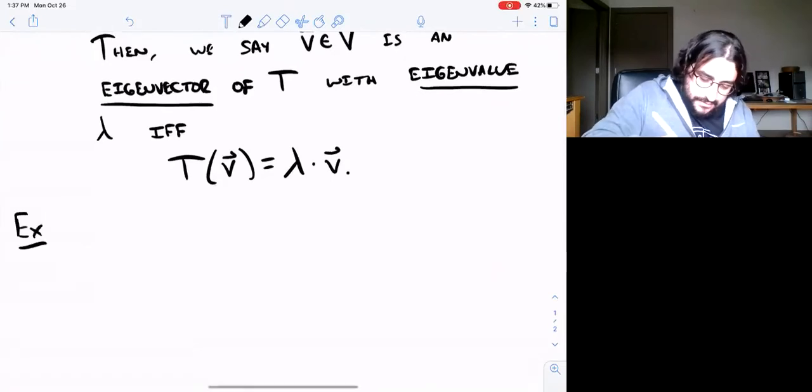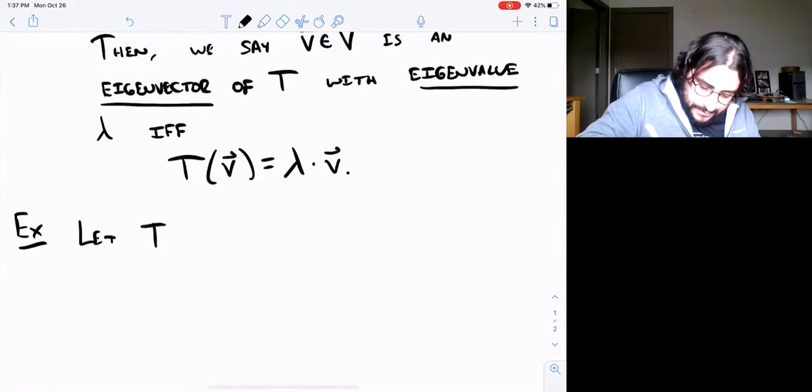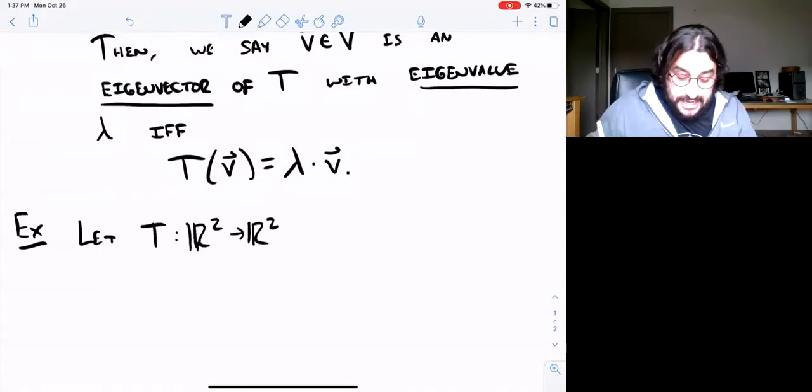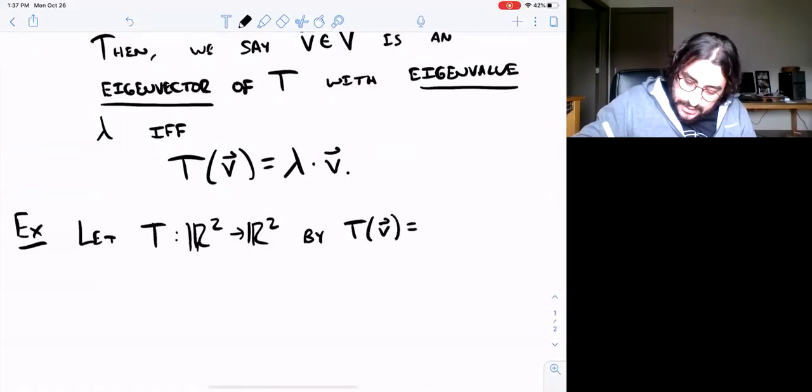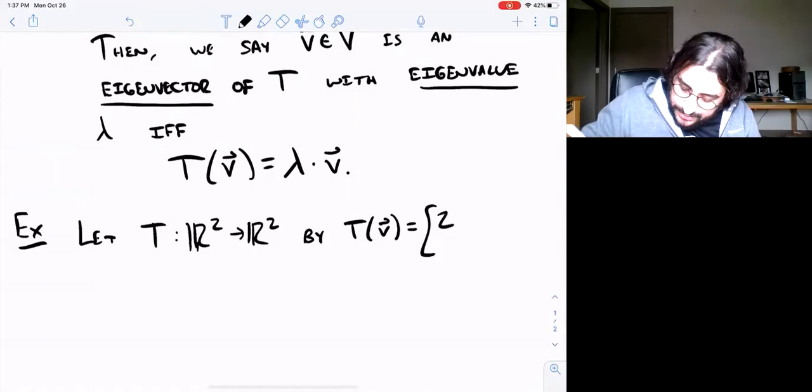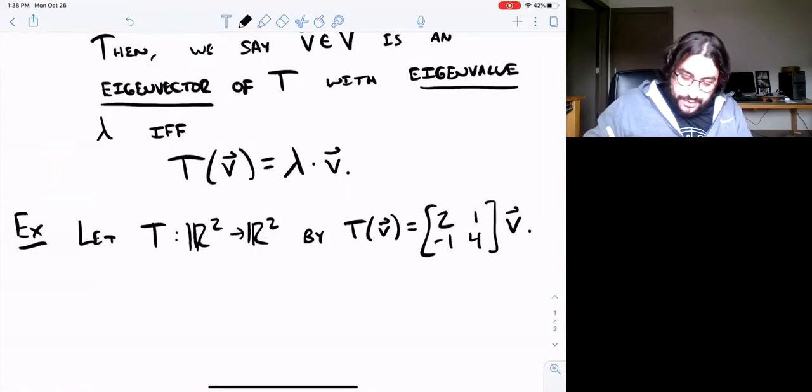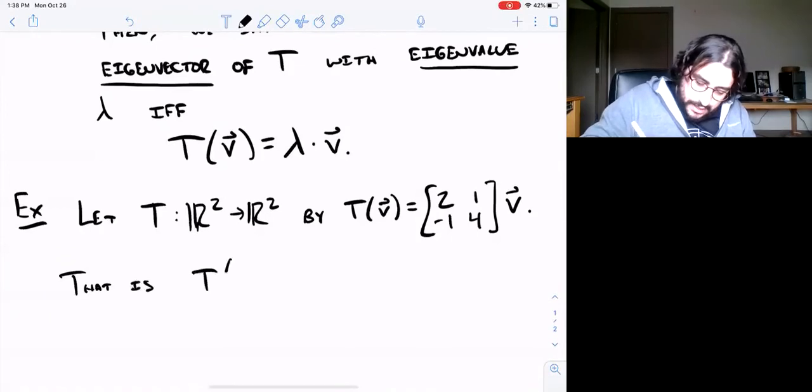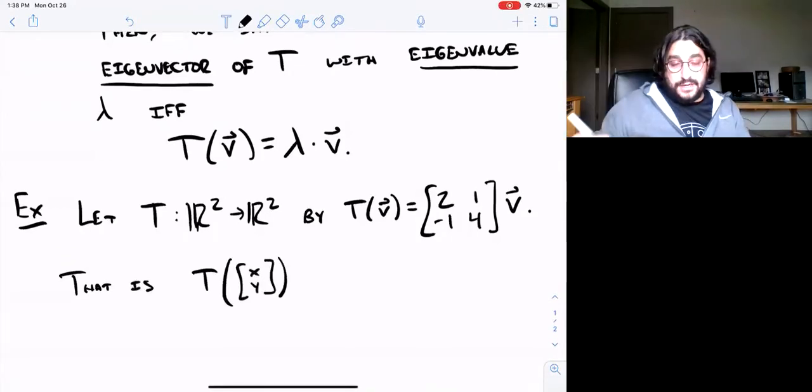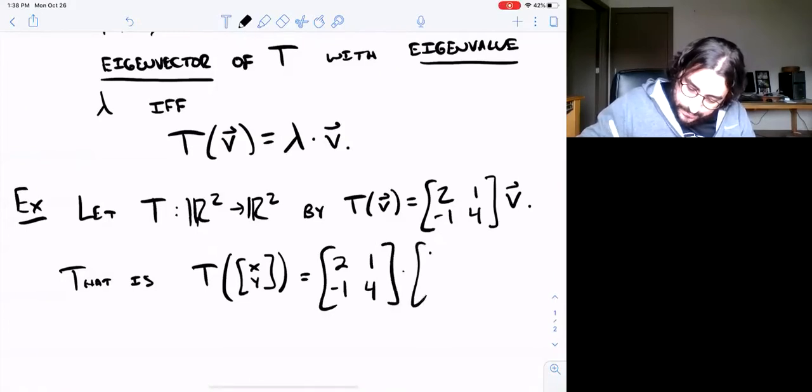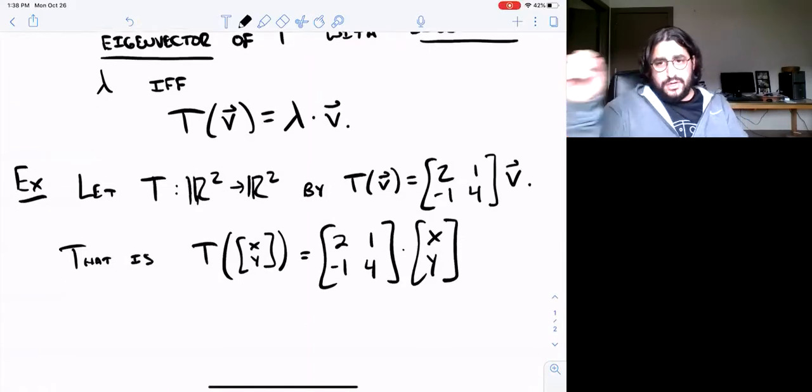For example, let's consider two-dimensional real Euclidean space, the plane, that's one of our most familiar vector spaces. And let's say that T is given by matrix multiplication or linear transformation. So let's say we have the matrix [2, 1; -1, 4]. So another way of saying this is if you write the vector v as (x, y), you just take the vector (x, y) and multiply it by that given matrix [2, 1; -1, 4].